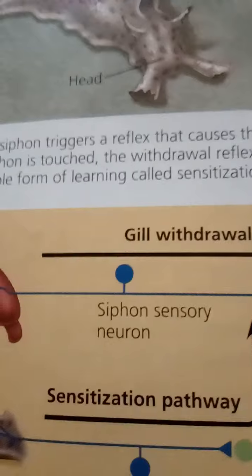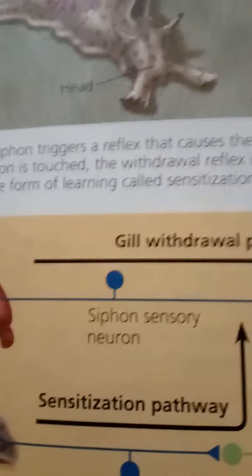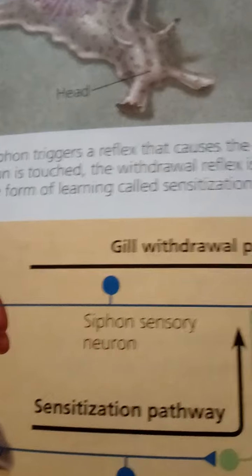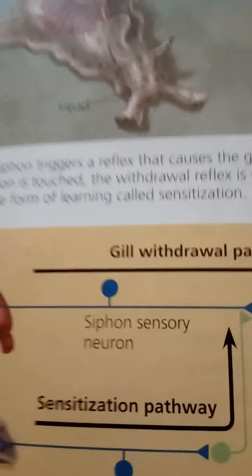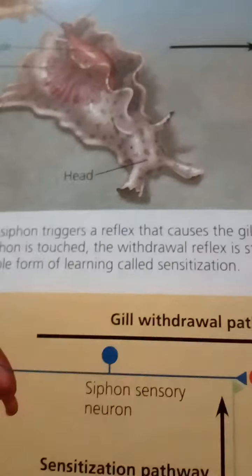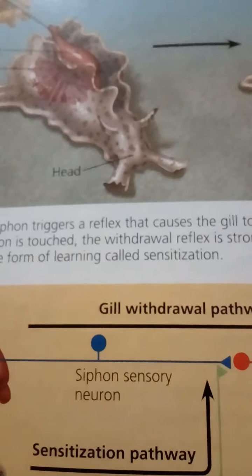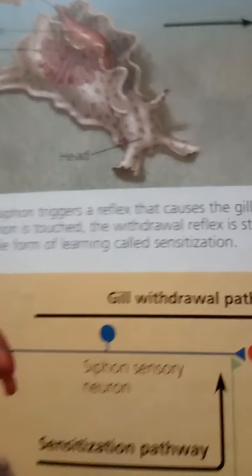NMDA receptors are part of channels that are both ligand-gated and voltage-gated. The channels can open only if glutamate is bound and the membrane is depolarized, as detailed in this figure.